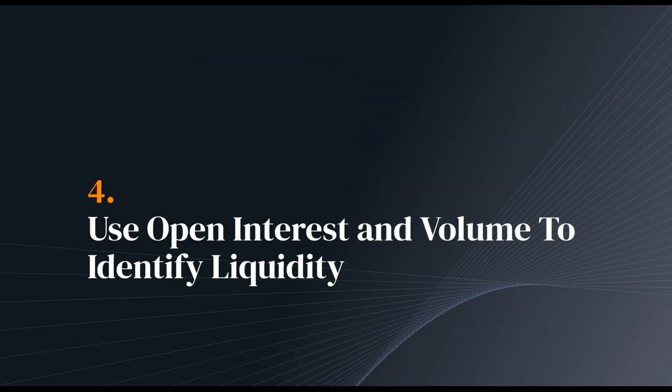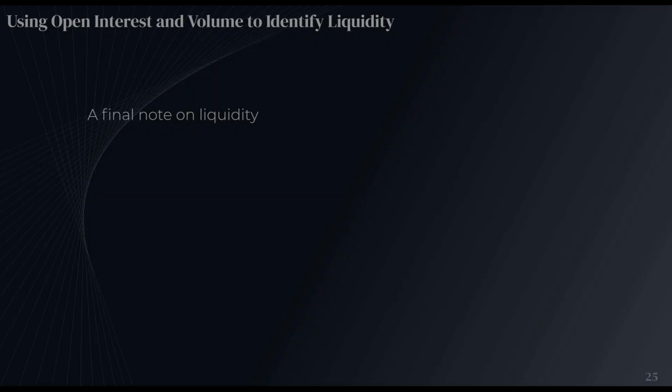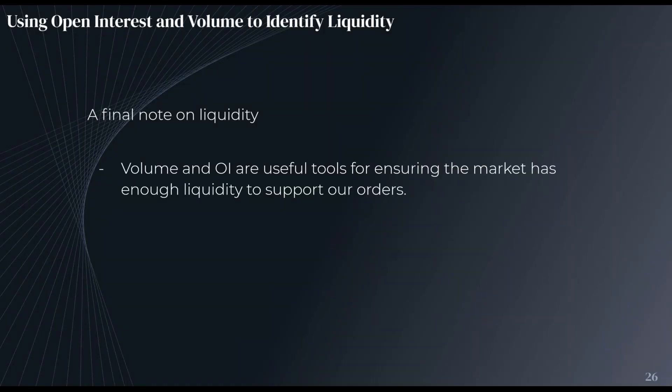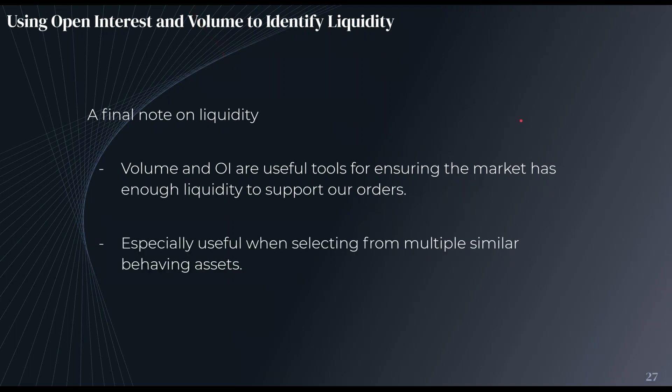Finally, let's go over how to use volume and open interest to identify liquidity. Volume and open interest are useful tools for ensuring the market has enough liquidity to support our orders. It becomes very difficult to navigate the market when there's no one to take the other side of your trades, especially when trading with larger position sizes. This is very useful when selecting from multiple similarly behaving assets — in crypto, for example, looking at the altcoin market, one of the best ways to choose which one to trade is to look for high-volume pairs, as they're easier to navigate and get large position sizes filled on.